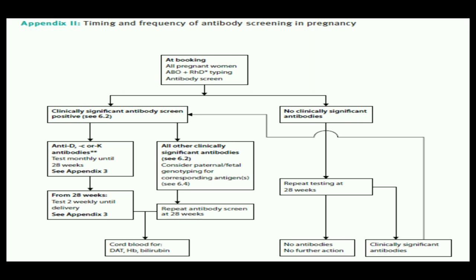When clinically significant antibodies are present, we follow two routes depending on circumstances. If anti-D, anti-small-c, or anti-K antibodies are present, test monthly until 28 weeks, then two-weekly until delivery. For all other clinically significant antibodies, consider paternal and fetal genotyping for corresponding antigens, then repeat antibody screening at 28 weeks. At the time of birth, cord blood should be checked for hemoglobin, bilirubin, and direct antiglobulin test.